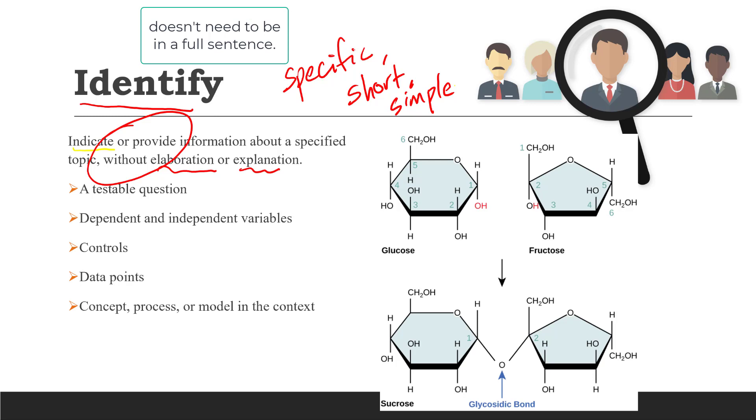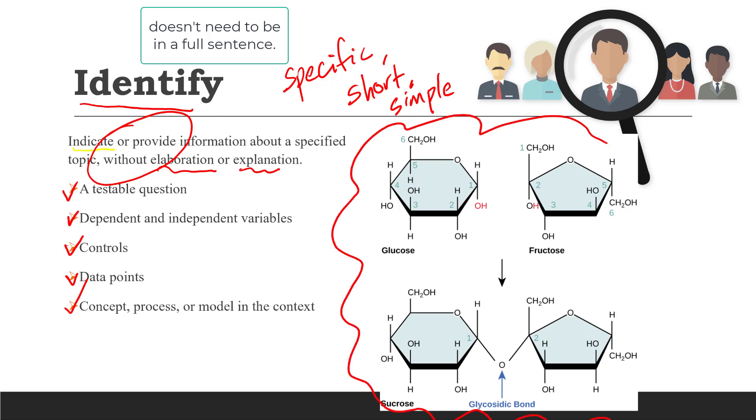Some of the common questions that will be asked to identify are a testable question, dependent and independent variable, controls, data points, concepts, process, or model in the context. For example, if we were asked to identify the bond that connects glucose and fructose to form a sucrose, the answer should just be glycosidic bond.